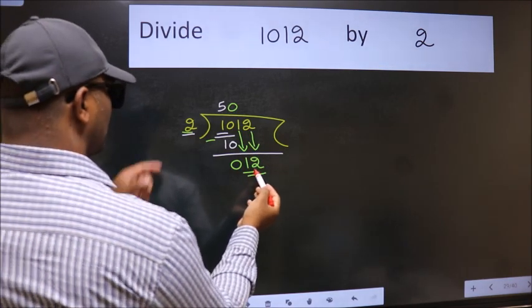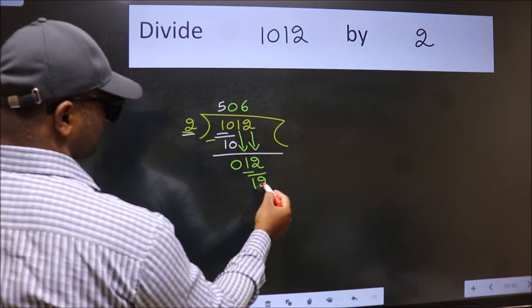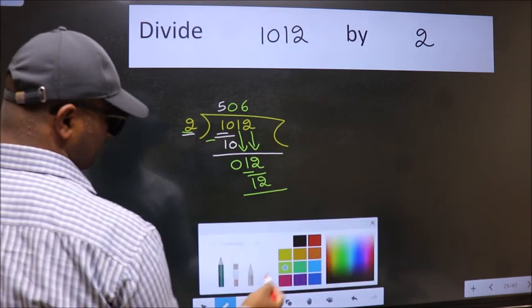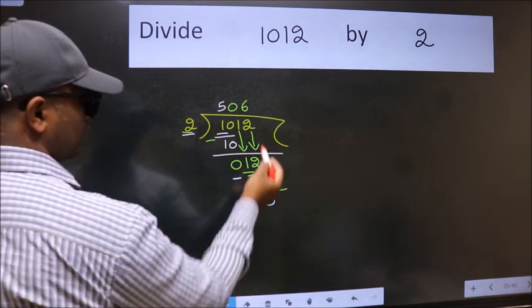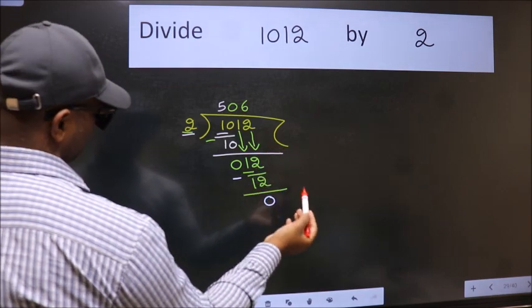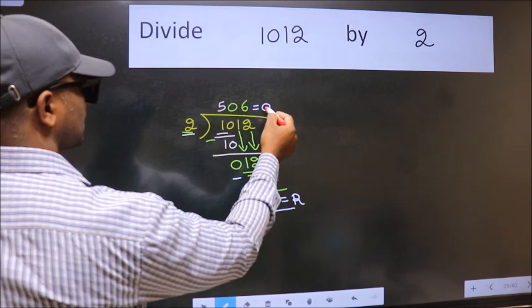So 12. When do we get 12 in 2 table? 2, 6, 12. Now we subtract. We get 0. No more numbers to bring it down. So we stop here. This is our remainder and this is our quotient.